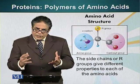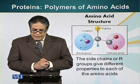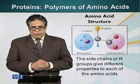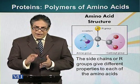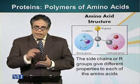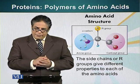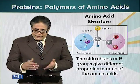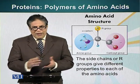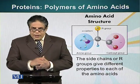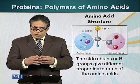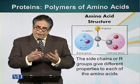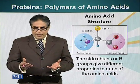Let's look at the basic structure of an amino acid. The amino acid has two groups: an amino group and a carboxyl group, attached to a central carbon. The central carbon has two other bonds — it forms a bond with a hydrogen atom and another bond with another group of atoms. This group of atoms is referred to as the R group.